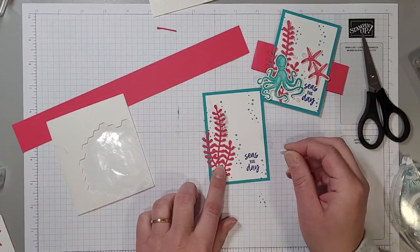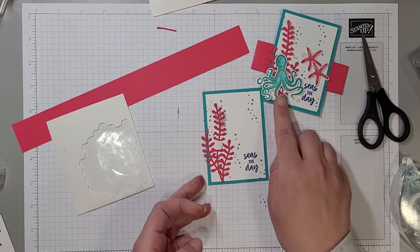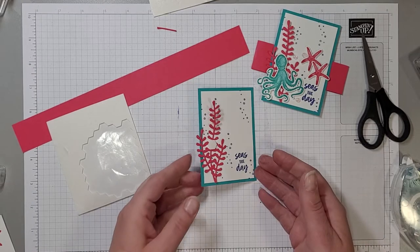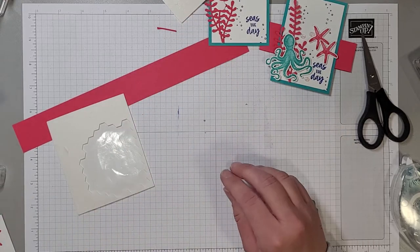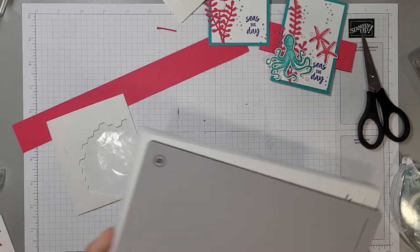And I'm just going to put one here and the reason I'm putting one right there is because I know that my octopus is going to cover that section. So that piece there can be set aside.